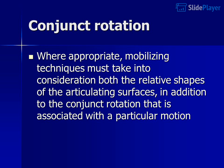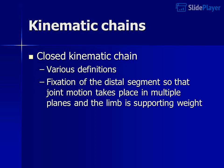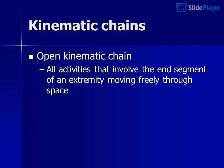Conjunct rotation is only under volitional control in joints with three DOF. Where appropriate, mobilizing techniques must take into consideration both the relative shapes of the articulating surfaces, in addition to the conjunct rotation that is associated with a particular motion. The expression kinematic chain is used in rehabilitation to describe the function or activity of an extremity or trunk in terms of a series of linked chains. A closed kinematic chain involves fixation of the distal segments so that joint motion takes place in multiple planes and the limb is supporting weight. An open kinematic chain involves all activities where the end segment of an extremity moves freely through space.